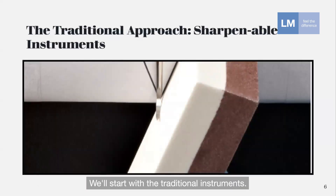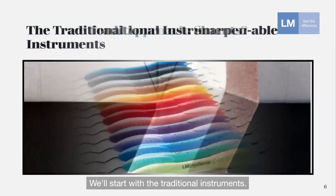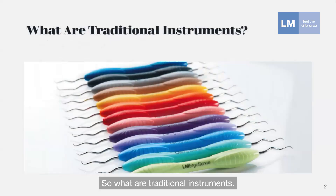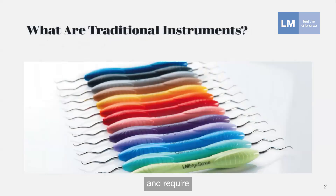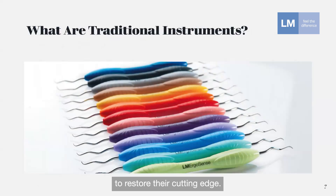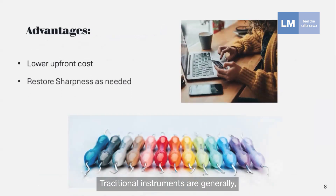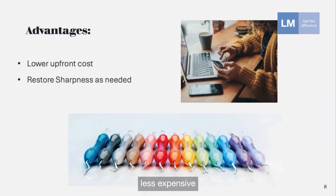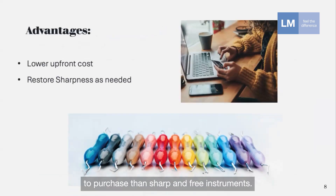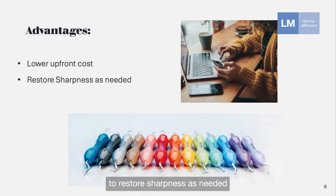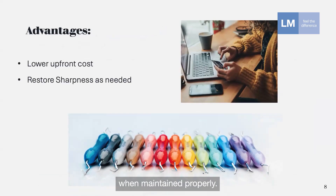Let's start with traditional instruments. Traditional instruments are crafted from stainless steel and require periodic sharpening to restore their cutting edge. The advantages include a lower upfront cost — traditional instruments are generally less expensive to purchase than sharpen-free instruments — and they allow you to restore sharpness as needed, expanding their lifespan when maintained properly.